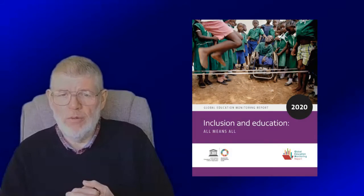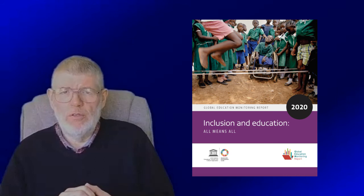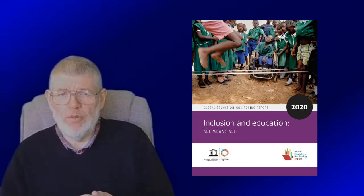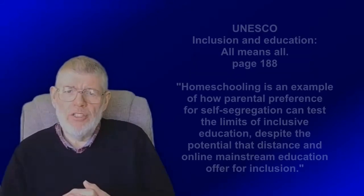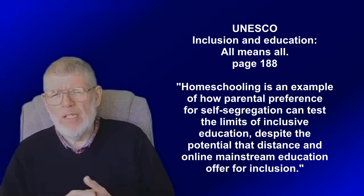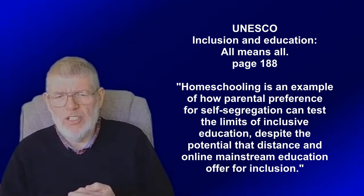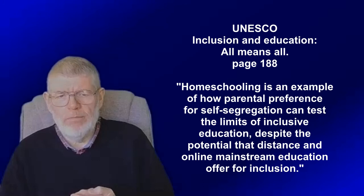One final point, recently UNESCO published its Global Education Monitoring Report entitled Inclusion and Education All Means All. I have not read the previous ones, but I have been told this is the first time these annual reports have referred to home education in any way. A statement on page 188 reads, Homeschooling is an example of how parental preference for self-segregation can test the limits of inclusive education, despite the potential that distance and online mainstream education offer for inclusion.